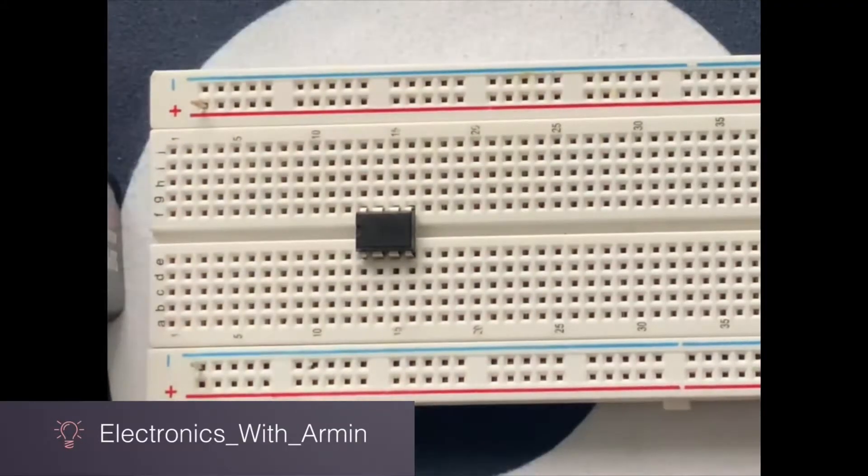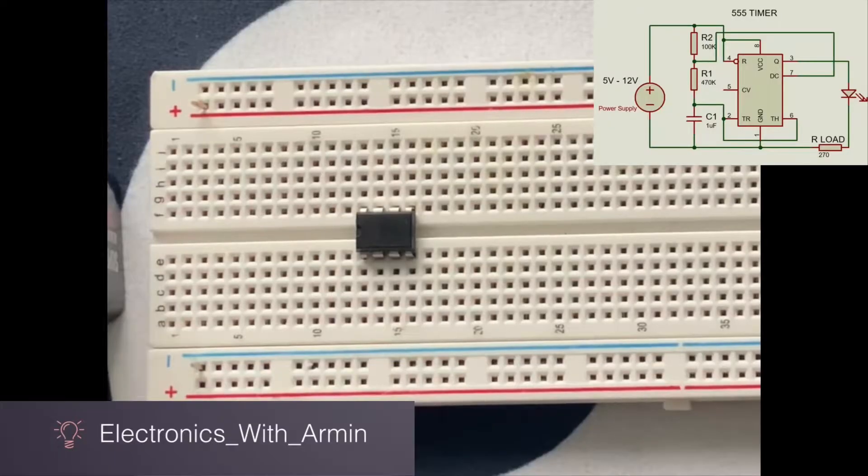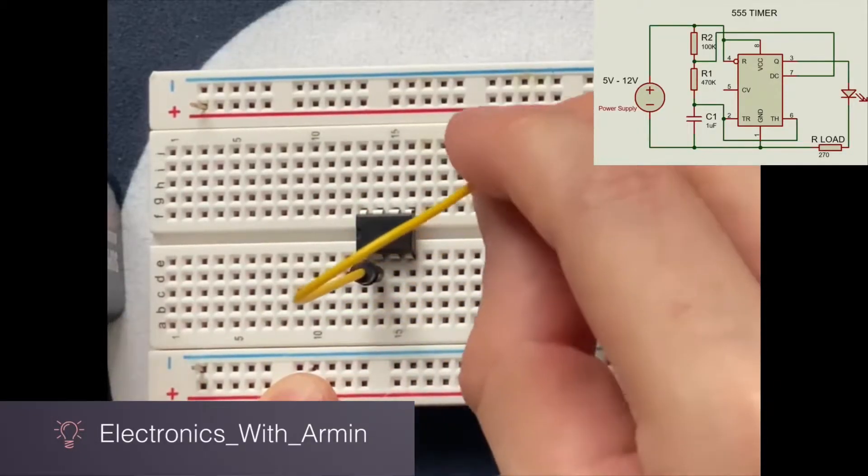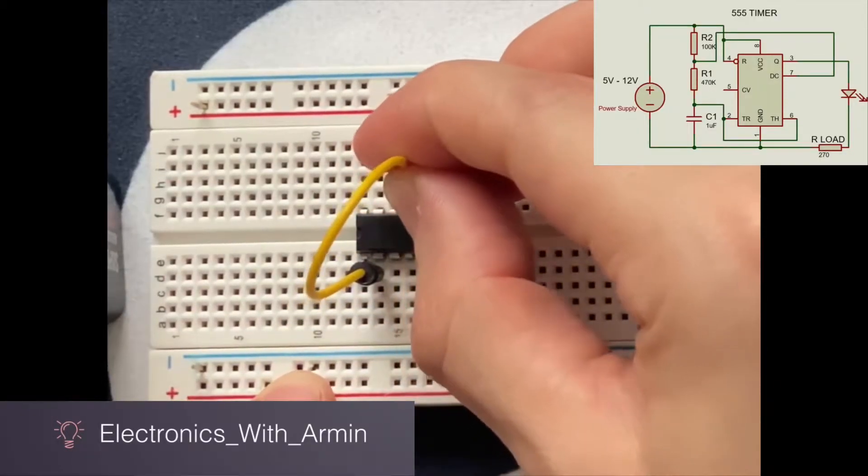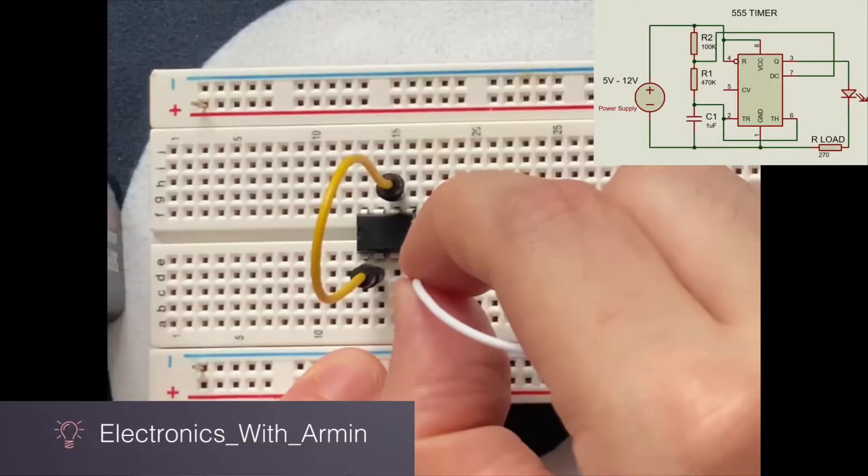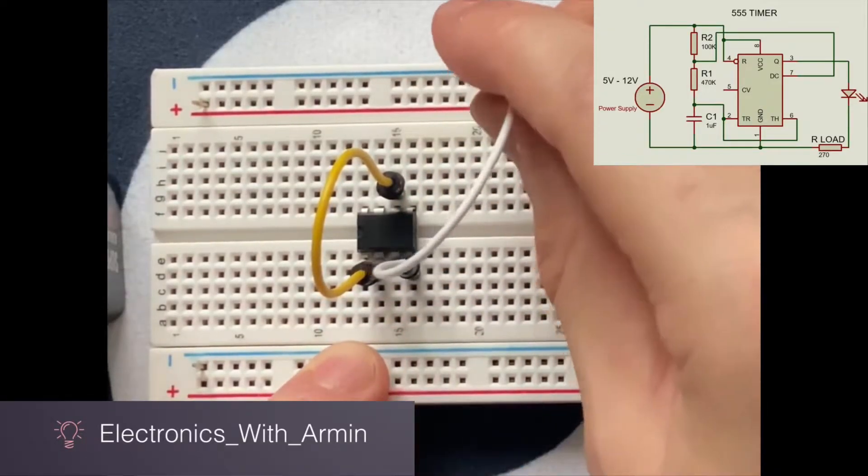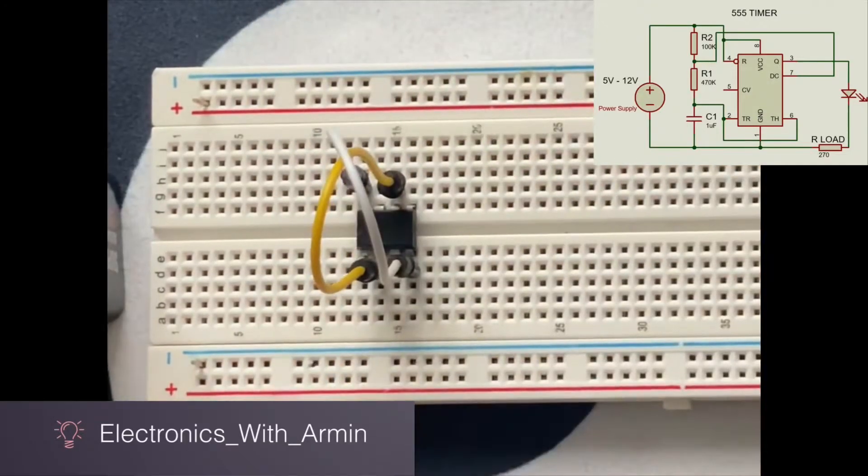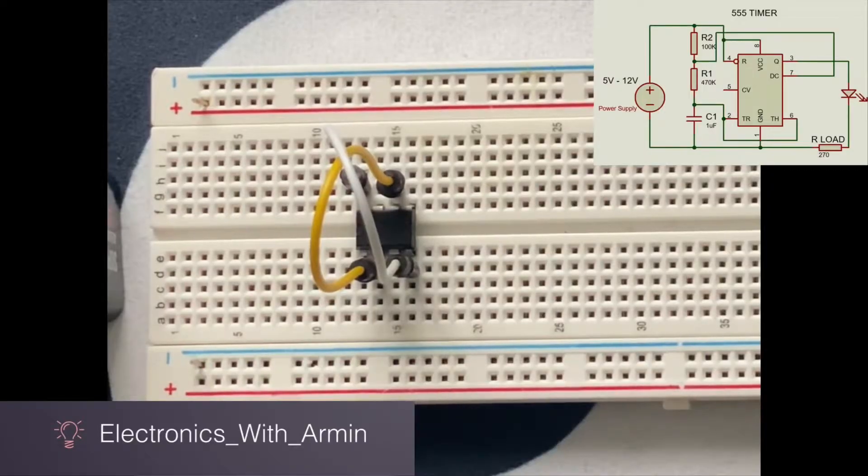Let's start making the circuit. According to the diagram, pins 2 and 6 have to be connected to each other, and pins 4 and 8 have to be connected to each other. Pin 2 is going to be here, I'm going to connect it to pin 6 which is right here. Then pin 4 and 8, pin 4 is going to be here and pin 8 is going to be the last pin.